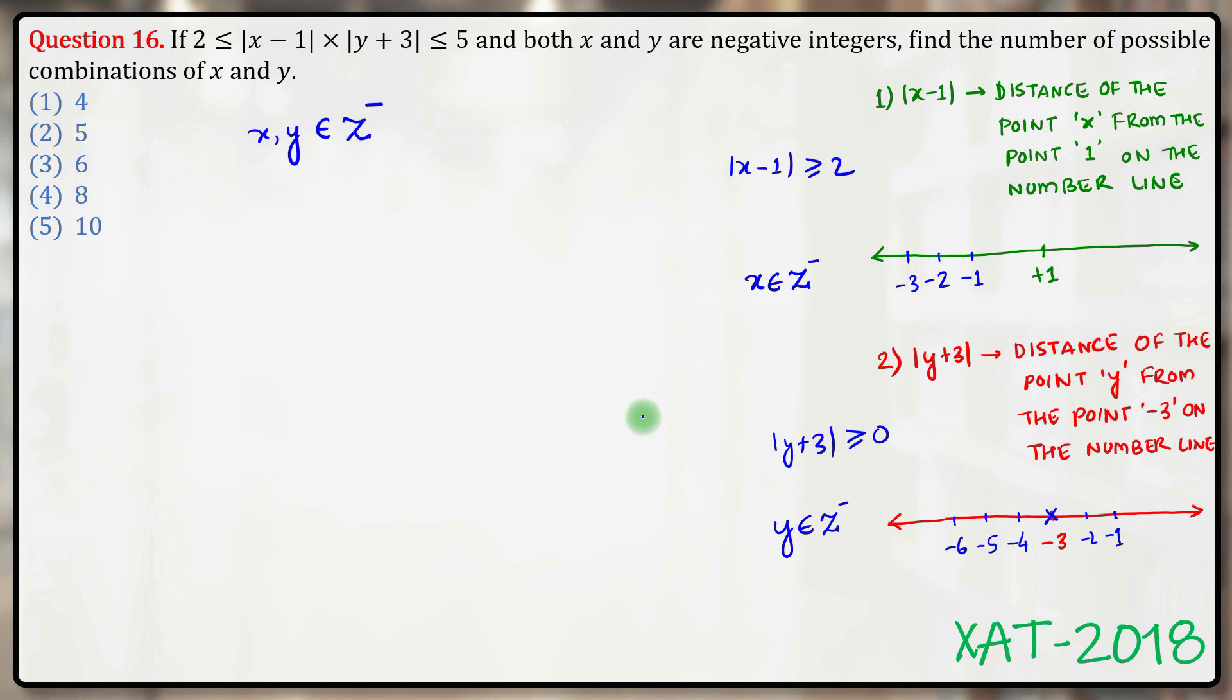Having that information, let's think about mod of x minus 1 times mod of y plus 3. We know that this product lies between 2 and 5, and because x and y are negative integers, mod of x minus 1 and mod of y plus 3 will also be integers, which means that this product can have only four different values: 2, 3, 4, or 5.